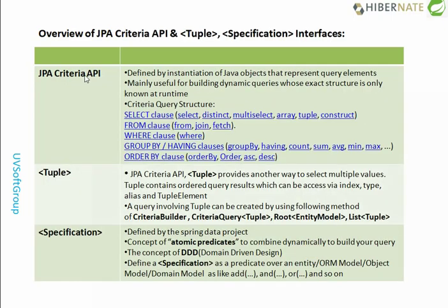The Criteria API provides an overview of the query structure — select, from, where, group by, order by. The JPA Criteria API is really efficient for building dynamic queries at runtime. It is part of the runtime and you can build queries dynamically.